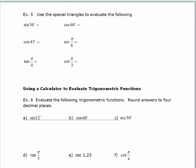In example 5, we're asked to evaluate six different trigonometric functions. I know these are all special angles, so what I'm first going to do is draw the two triangles and use them as a reference. I've got the 45-45 right triangle where this is the 90 degree angle, with sides 1, 1, and the square root of 2, and both angles are 45 degrees.